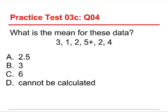Alright, what is the mean for these data? The numbers are 3, 1, 2, 5+, 2, and 4. And the choices are 2.5, 3, 6, or cannot be calculated. Well, the answer for this one is a little unusual. This is my trick question. The answer is cannot be calculated.